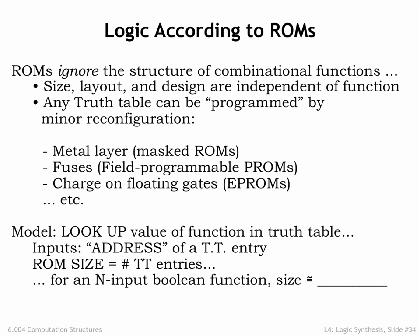If the ROM has N inputs and M outputs, then the switch matrix will have 2 to the N rows and M output columns, corresponding exactly to the size of the truth table.